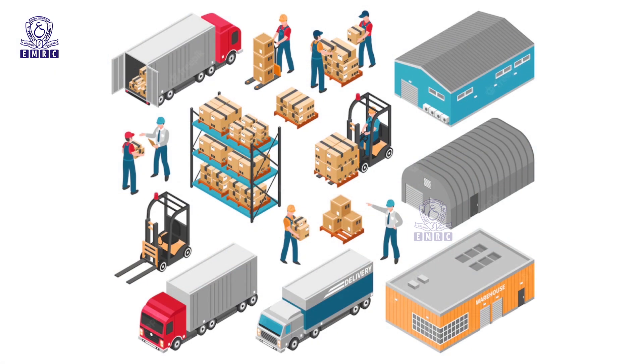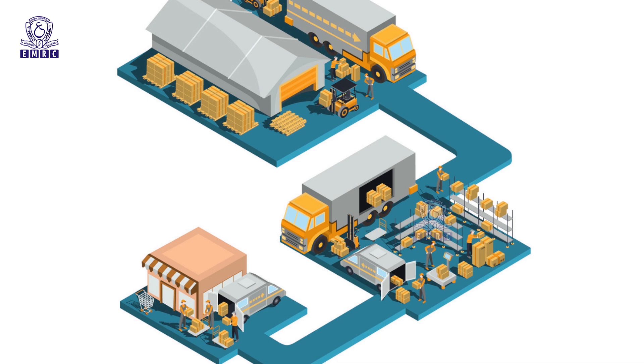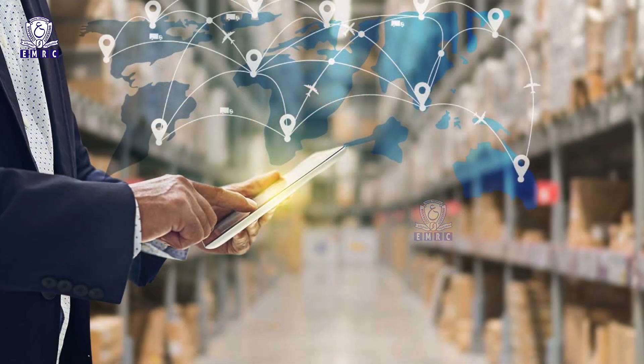The distribution services are activities that deal with the movement of people, goods and information from one place to another. Services to companies are activities that are contracted to other companies or organizations. And services to consumers include catering businesses, repairs, cleaning and hotels.